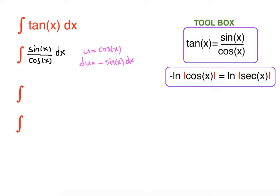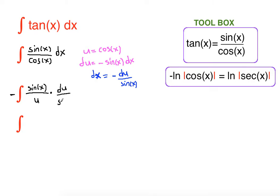If we solve for dx, we get negative du over sine x. Let's rewrite in terms of u. We have sine x in the numerator, cosine x becomes u, and dx becomes negative du over sine x — pulling the negative sign to the front. The sine x cancels out and we are left with negative integral of 1 over u du.